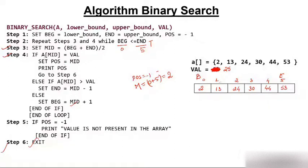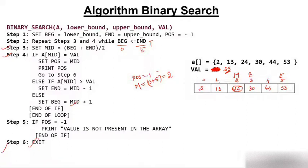Array[2] is 24, which is not equal to 25. Is 24 greater than 25? No. So we go to the else part and set beginning = mid+1 = 3. Beginning is now 3. We check: is 3 less than 5? Yes. We calculate mid again: (3+5)/2 = 4.